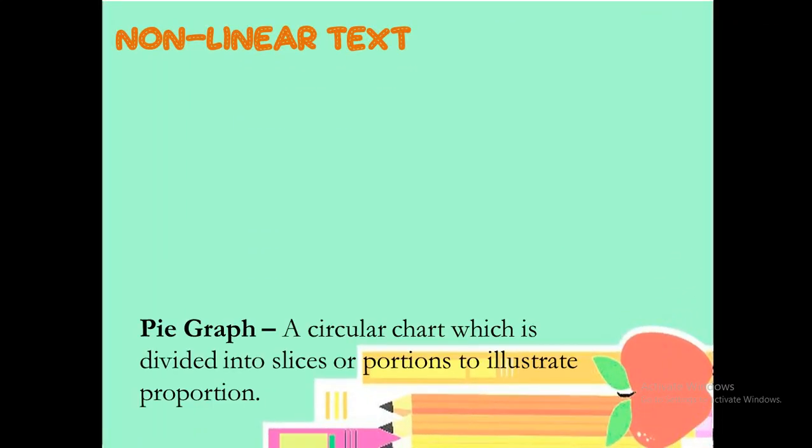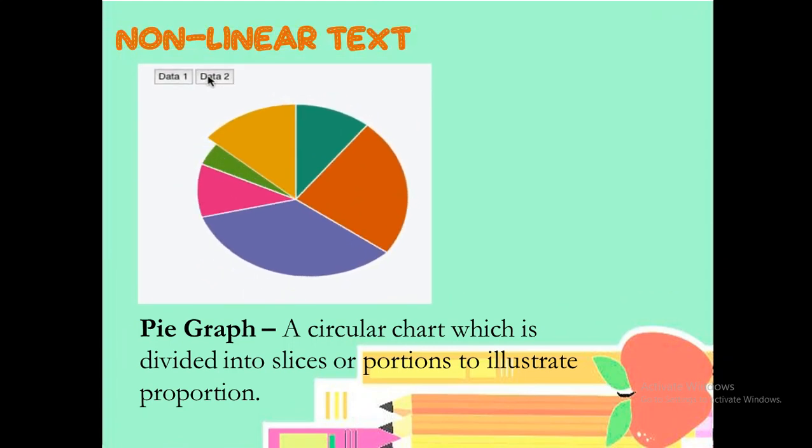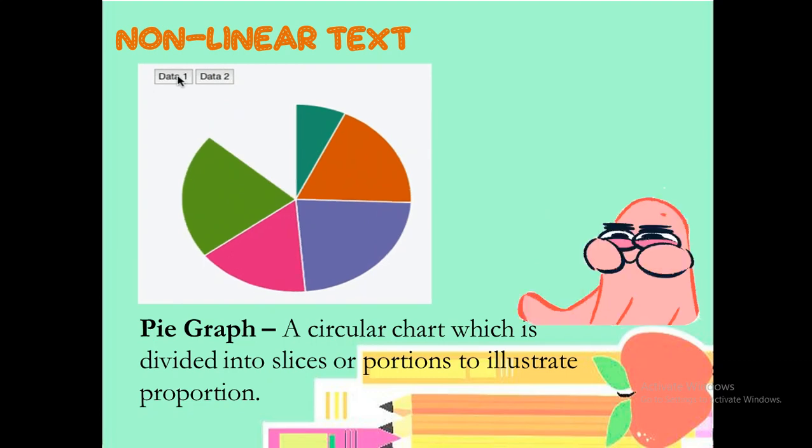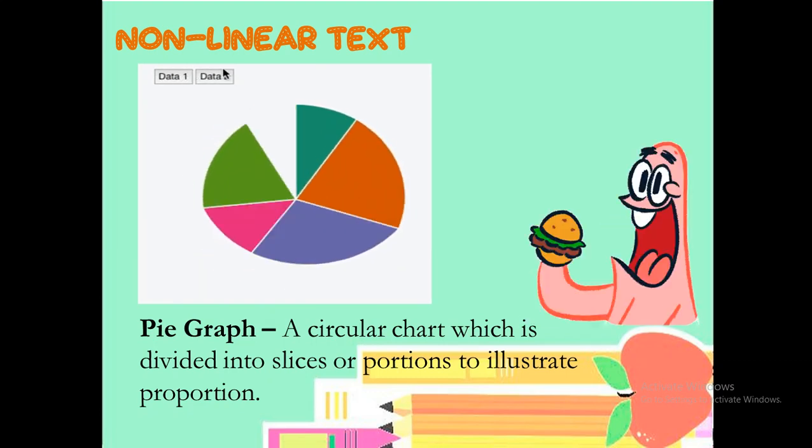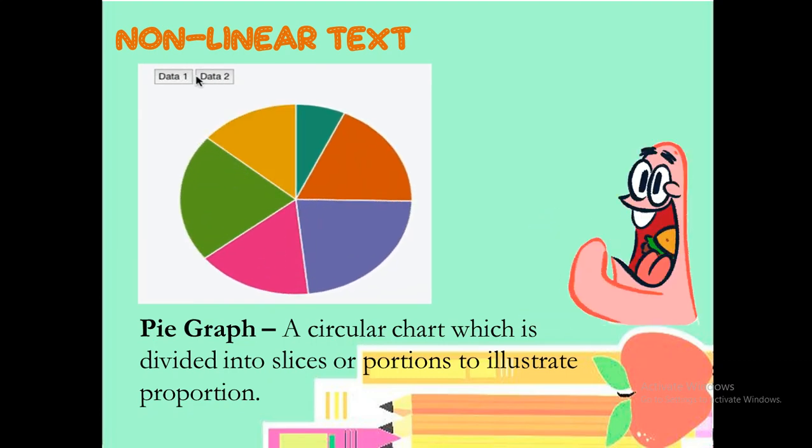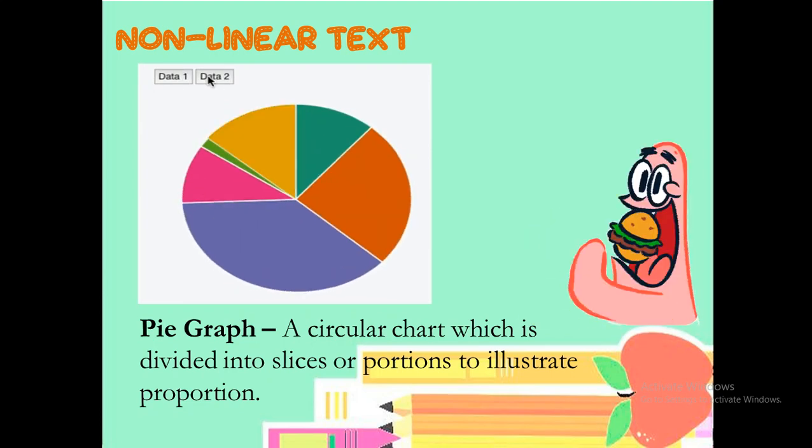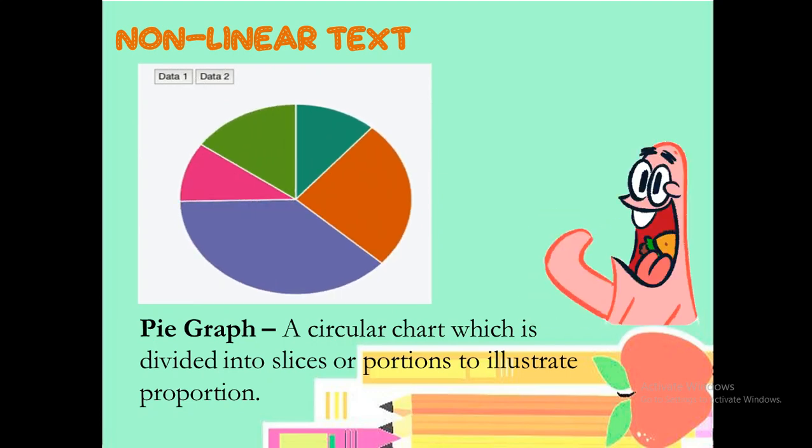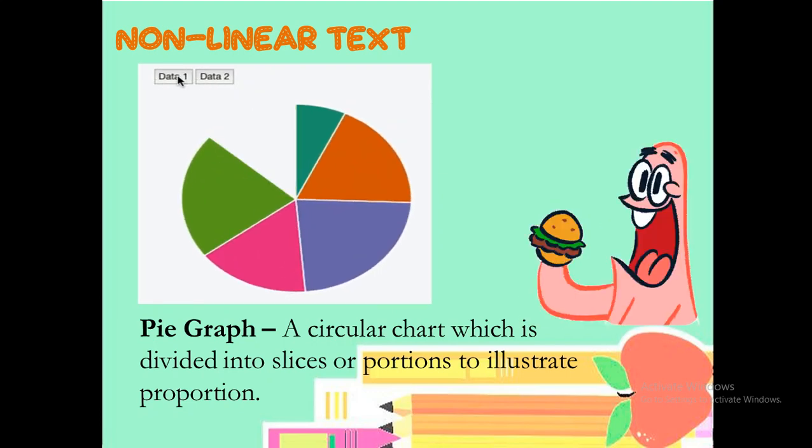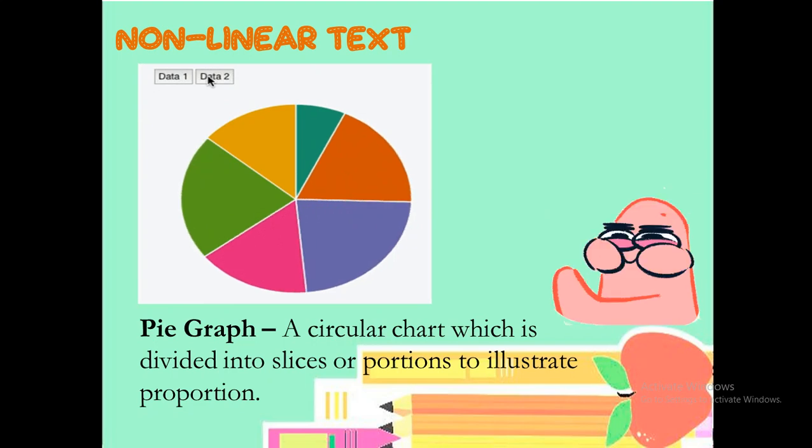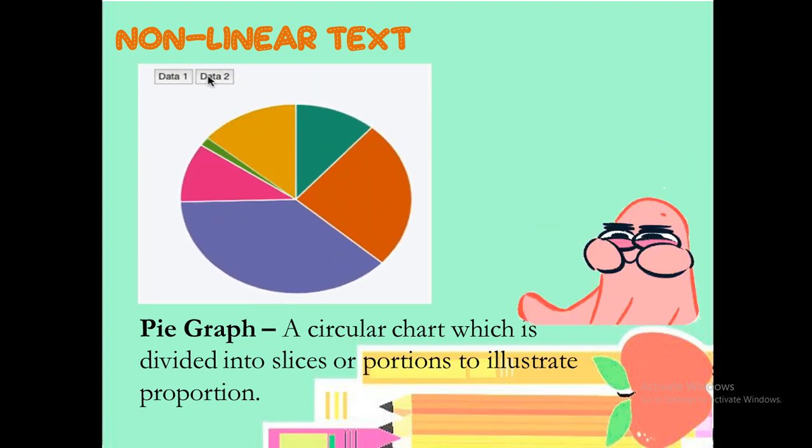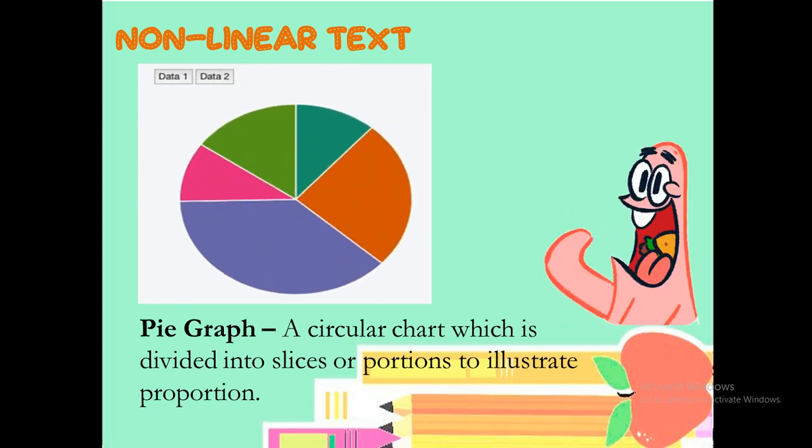The other one would be the pie graph, a circular chart which is divided into slices or portion to illustrate proportion. That's why we call them or we call this as pie chart because of its structure. It's as if you are eating a pizza or a pie divided into different slices. But, in pie graph, you will be using different portion, the bigger portion and the smaller portion in order to present the data.